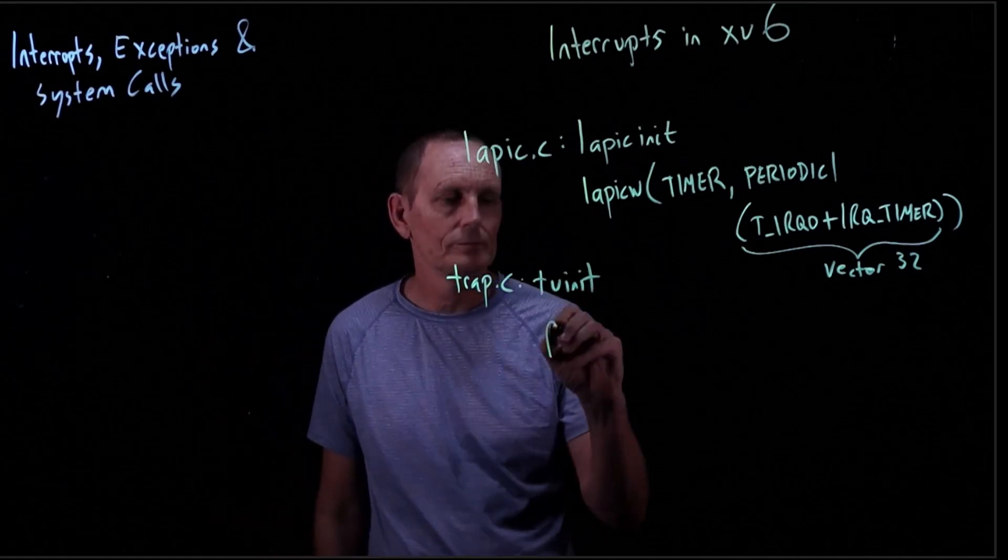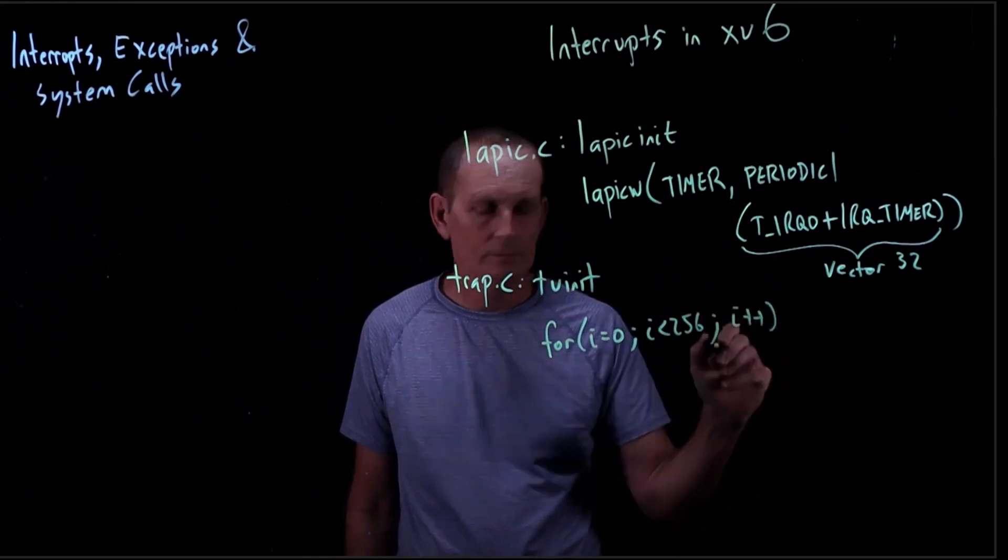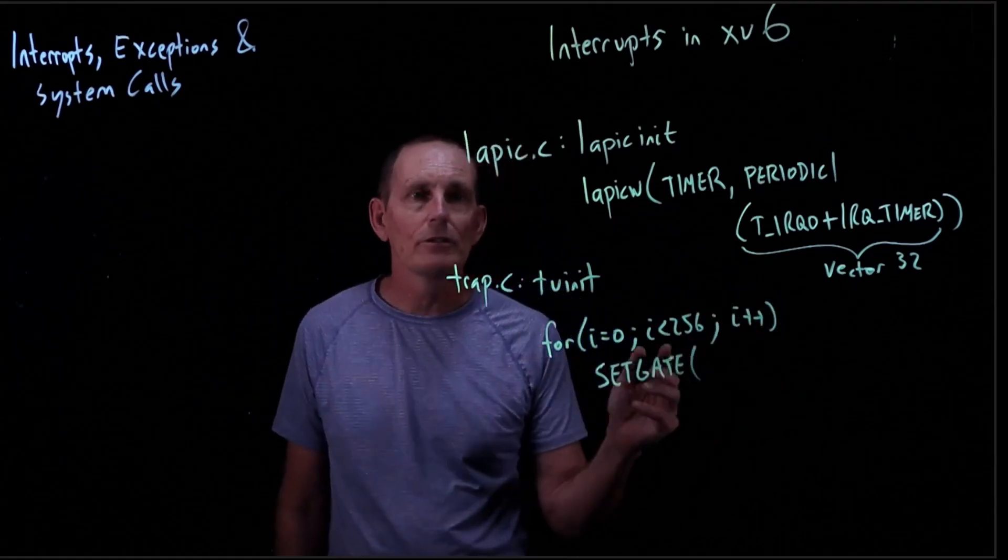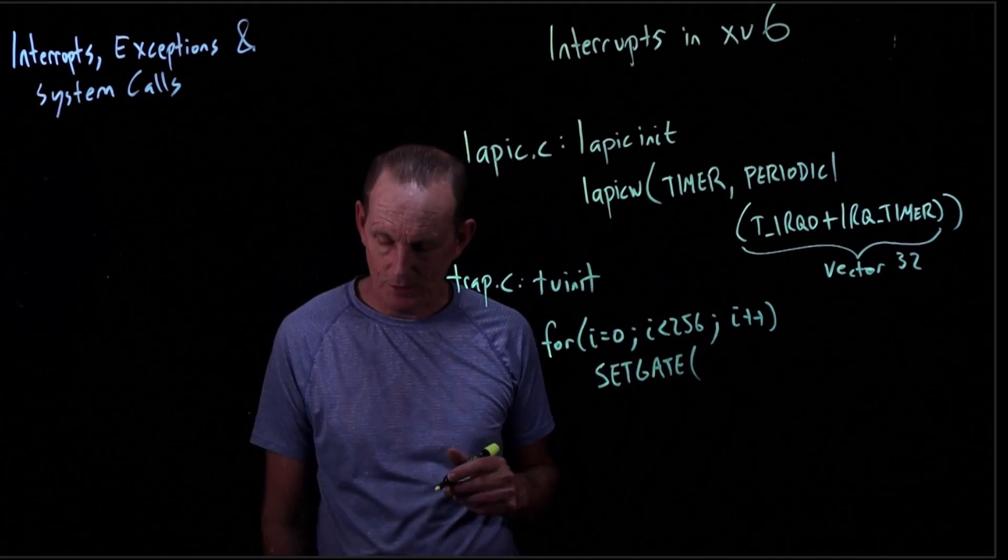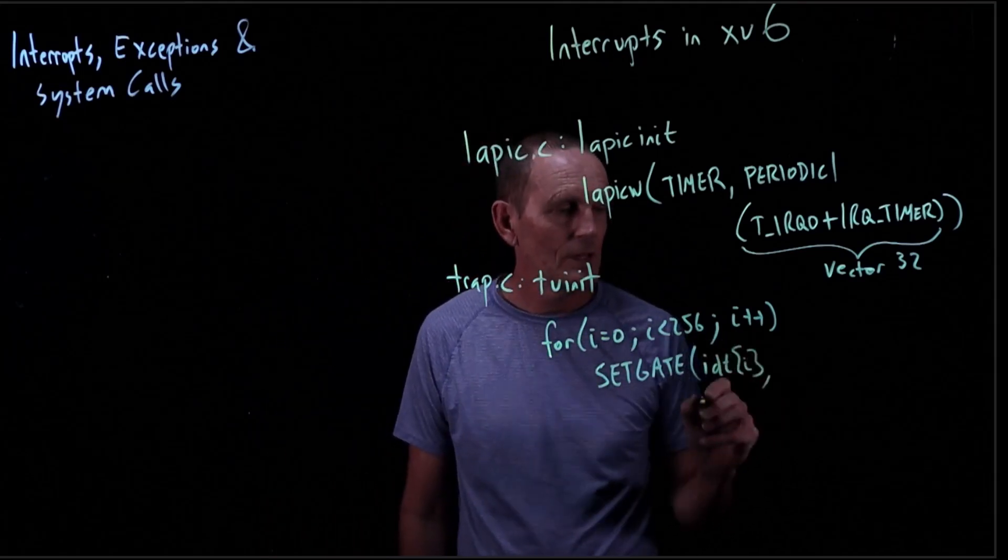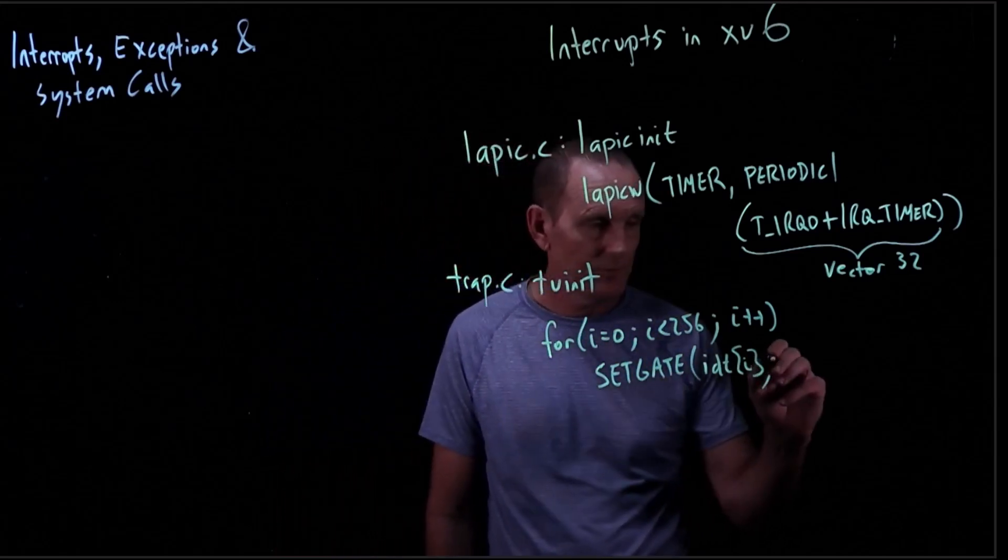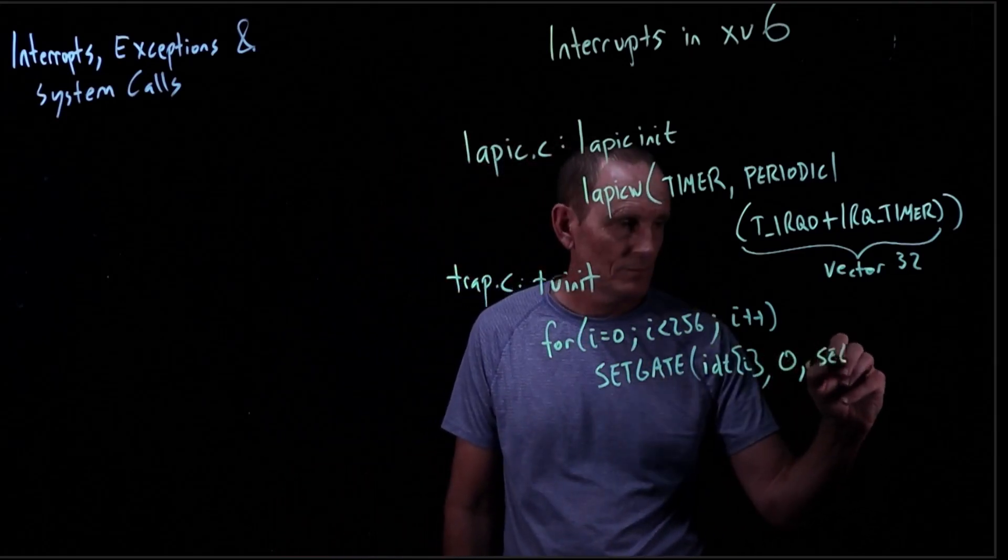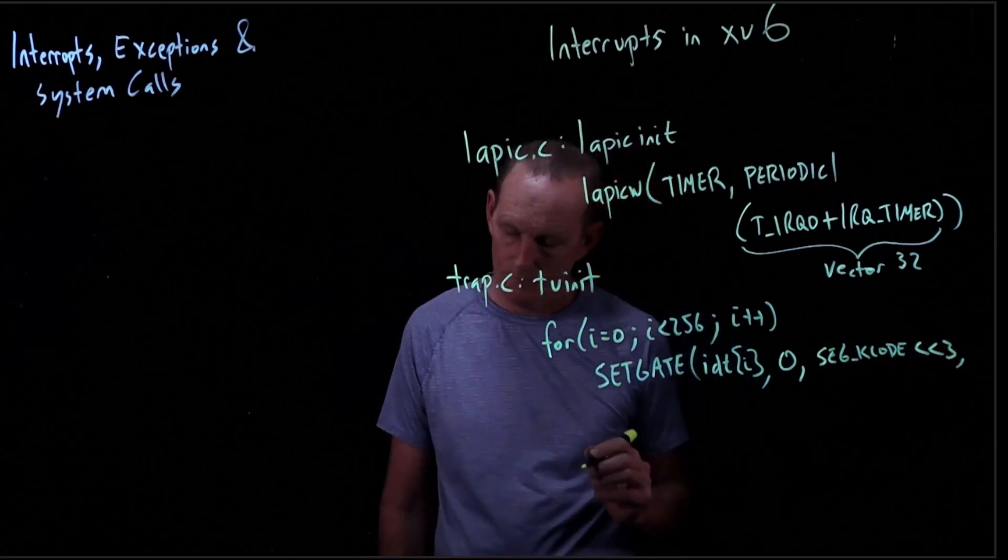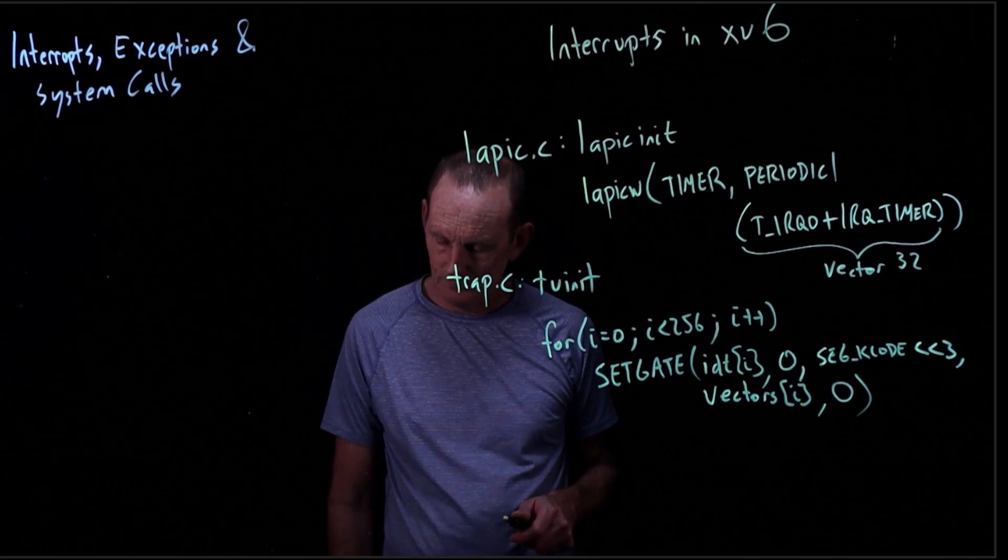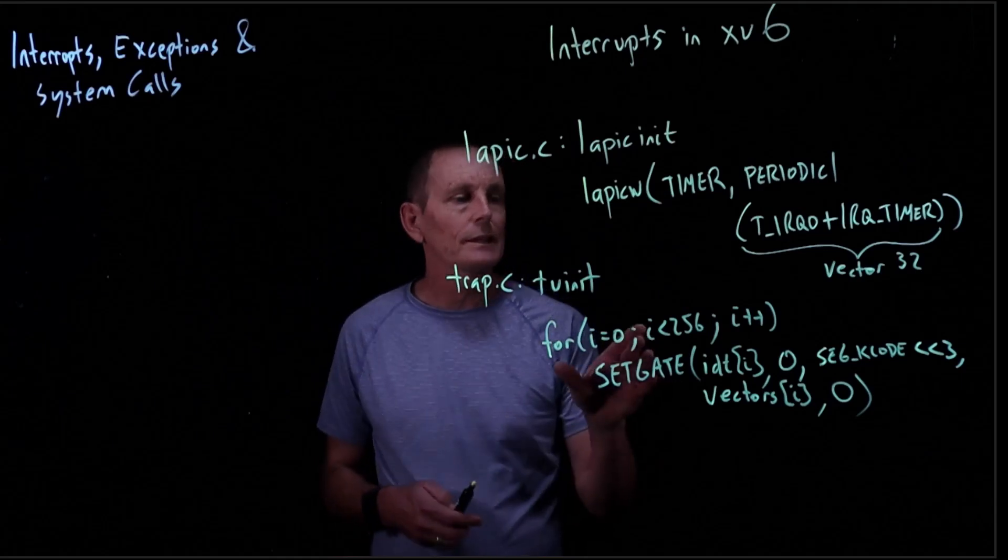So basically, we just have a loop. And what do we do in the loop? We've got a macro for the interrupt descriptor table. So this is the ith entry of the descriptor table. And we set it.